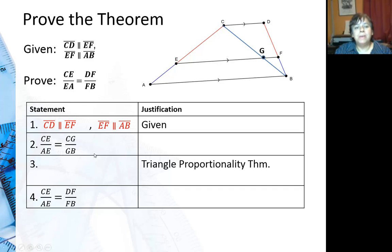The first statement is always your givens, that the lines are parallel. Now I can say that CE is to EA as CG is to GB. Why can I say that? That's the triangle proportionality theorem. This piece is to that piece as CG is to GB.